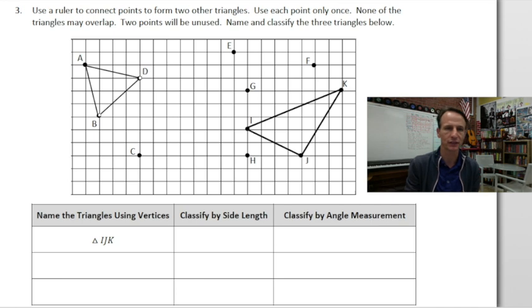If we look at these three sides, you can see they cross through the intersections of the grid. This pretty well appears to be an equilateral triangle. So triangle ABD is equilateral, and by angle measurement, all three angles are acute.